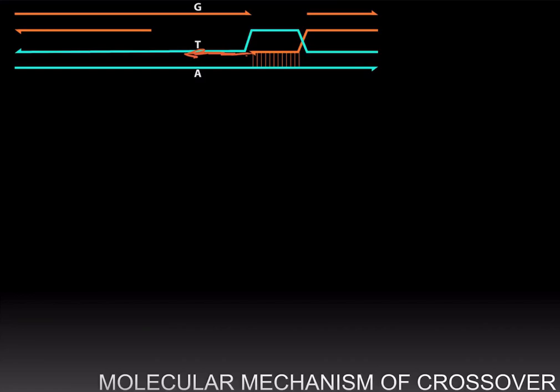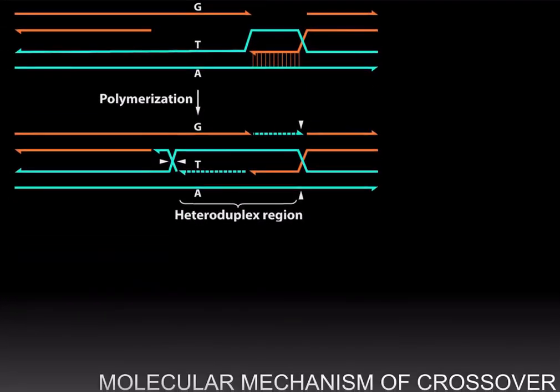And the other orange strand is using the other cyan strand as a template. Once the replication is over, the ends are sealed, and this results in a structure which has two single-strand junctions and this structure is called a Holiday junction.